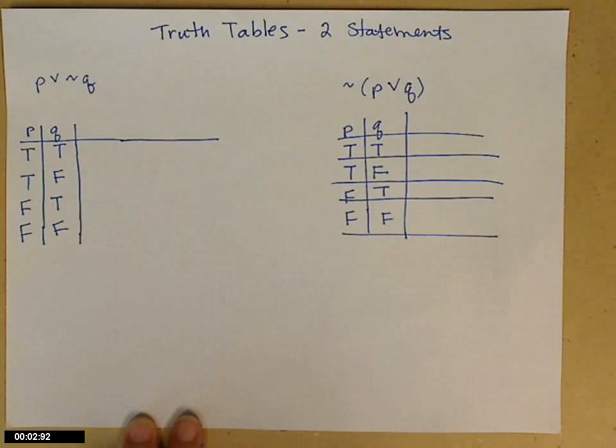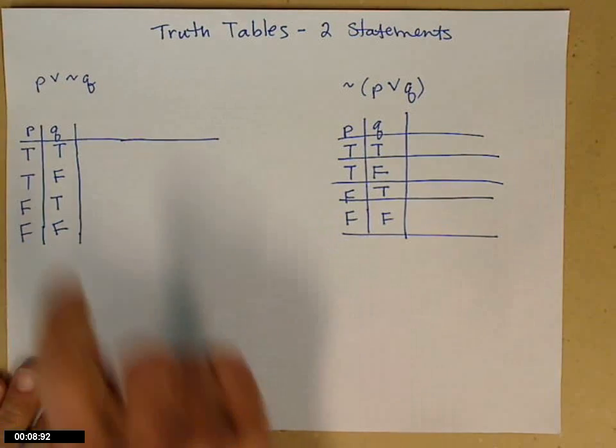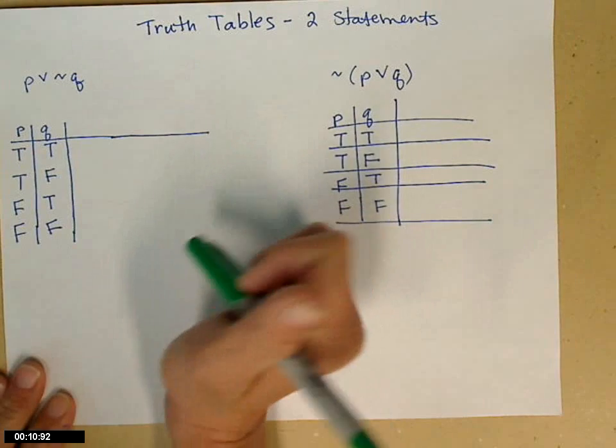Let's take a look at two examples of truth tables using two statements. I started both of them out the same. P and Q are standing for my statements.